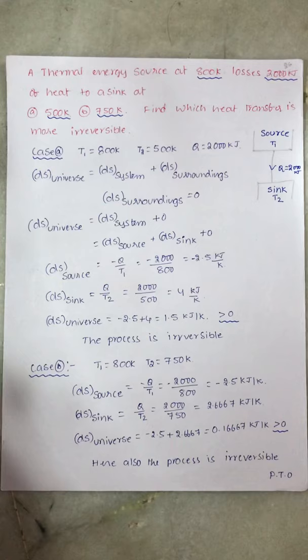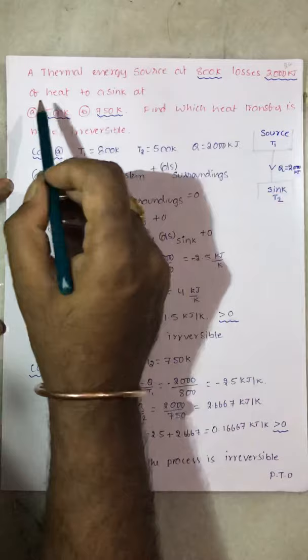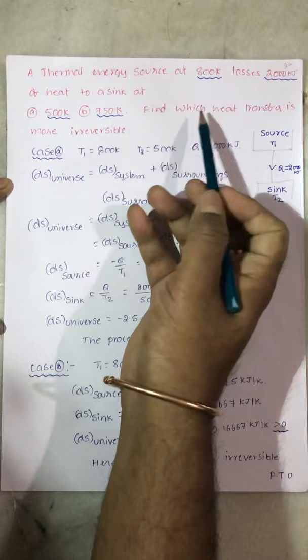Good morning. I welcome you all to the series of lectures on thermodynamics. Today we are going to discuss problems on entropy. A thermal energy source at 800K loses 2000 kJ of heat to a sink at (a) 500K and (b) 750K. Find which heat transfer is more irreversible.